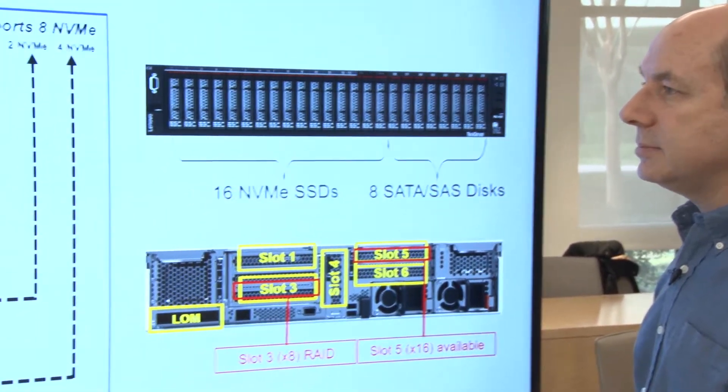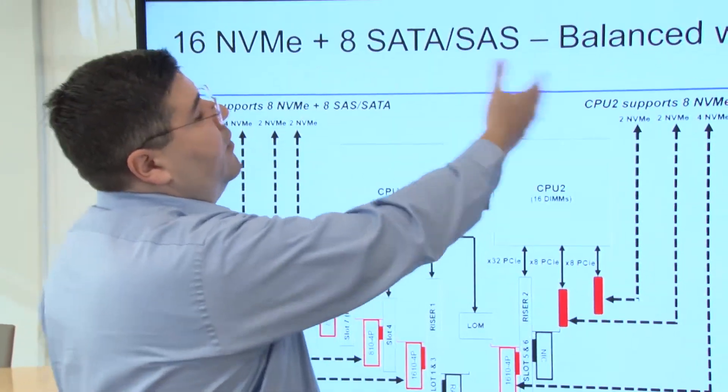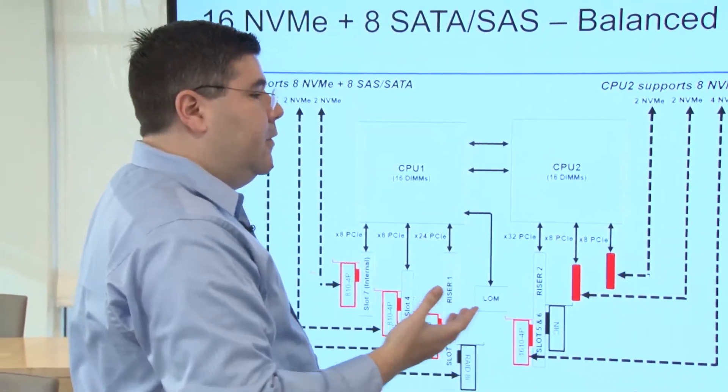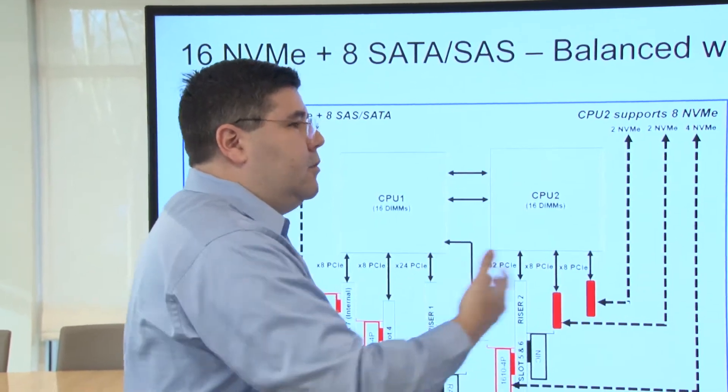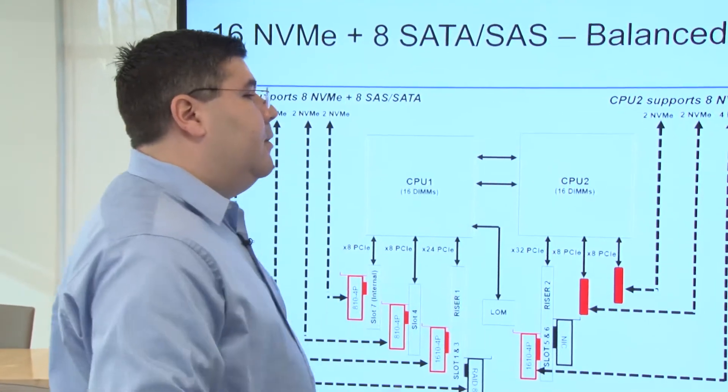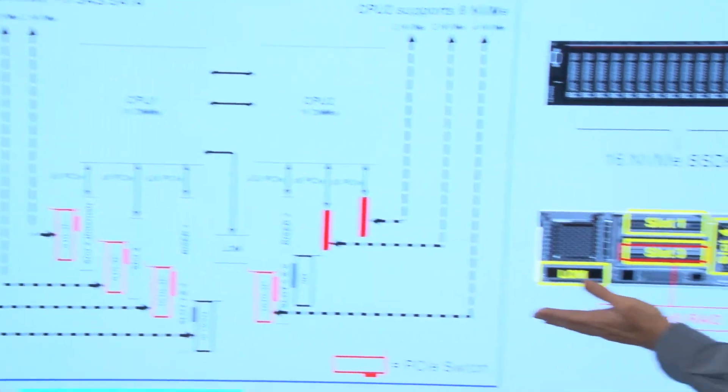So you want to have your network connectivity, of course, to balance again the amount of flash storage that you have inside the server. You need to have the network bandwidth as well to bring your traffic in and out of the system. Okay, so this is the 16 NVMe.